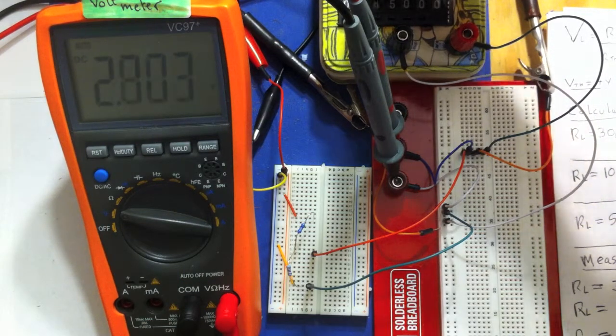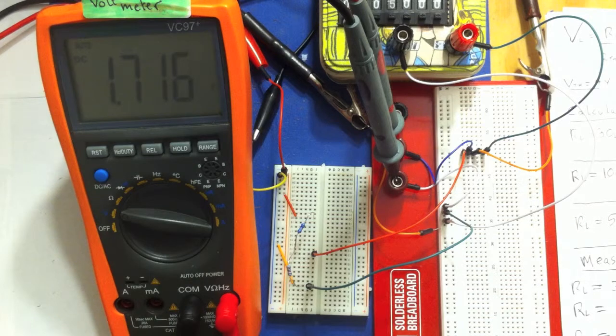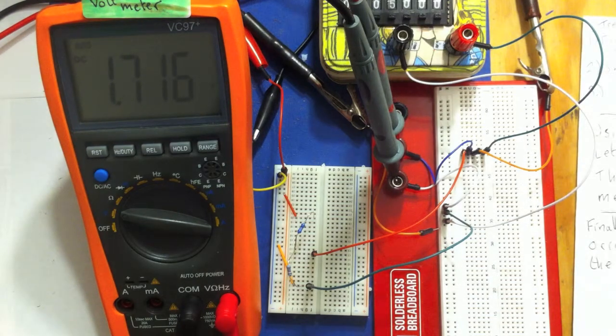Finally we've got the 5k. Let's change the decade box to 5. So for 5 we've got 1.71 volts. That's for the 5.